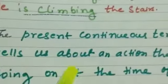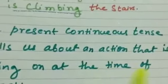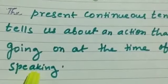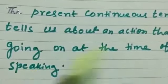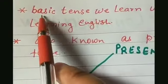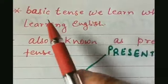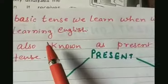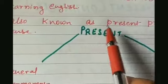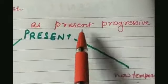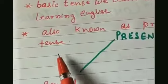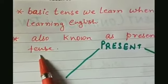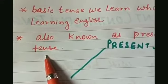The present continuous tense tells us about an action that is going on at the time of speaking. Present continuous tense is the basic tense which we learn when we start learning English. It is also known as present progressive tense, and is mentioned with this name in certain grammar books.